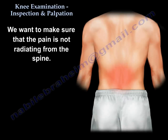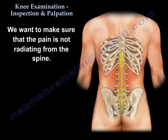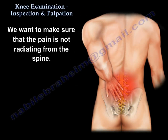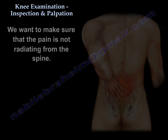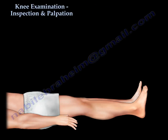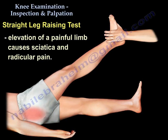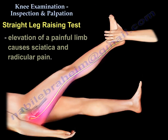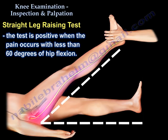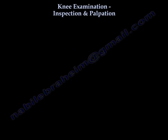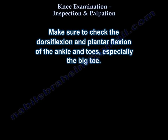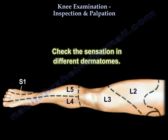Antalgic gait is usually caused by hip or knee pathology, or from severe disc radiation symptoms. We make sure pain is not radiating from the spine by asking relevant questions and possibly performing the straight leg raise test, which is positive when elevation of the painful limb causes severe sciatica and radicular pain. We also check dorsiflexion, plantar flexion of the ankle and toes, and sensation in different dermatomes.